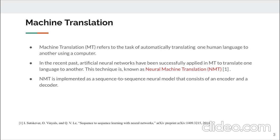Machine translation is translating automatically one human language to another using a computer. Artificial neural networks have been successfully applied to machine translation, known as neural machine translation. NMT is implemented as a sequence-to-sequence neural model consisting of an encoder and decoder. The encoder encodes input sentences to a fixed-length vector representation, and the decoder decodes that representation to the target output sentences.